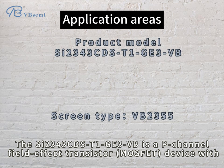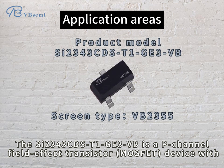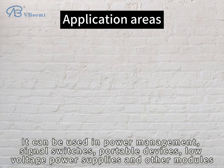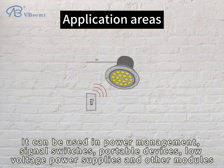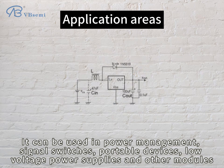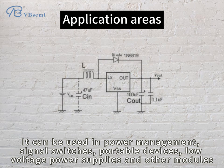The C2343CDST1GE3VB is a P-channel field-effect transistor MOSFET device with moderate current tolerance and low drain-source resistance. For low voltage applications, it can be used in power management, signal switches, portable devices, low voltage power supplies, and other modules.